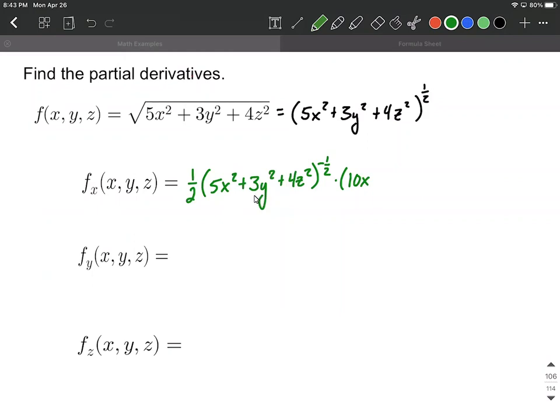The derivative of this next term, we don't have any x's here so we treat this as though it's all constant. So its derivative is going to be zero. And then finally, the derivative of this last term, there are no x's here either, so we treat it as though these are all constants. So its derivative is also zero. So again, we have another plus zero at the end, but we can leave that off.